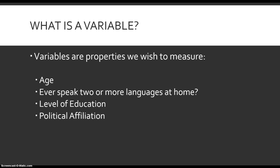So first off, what is a variable? A variable is essentially an aspect of the social world that we are interested in measuring. Variables are going to be determined by our research question — whatever it is that we are interested in finding out about the social world. Our variables can essentially be described as properties that we wish to measure, and these properties can be found among individuals, among institutions, organizations, entire cities, and even entire countries.